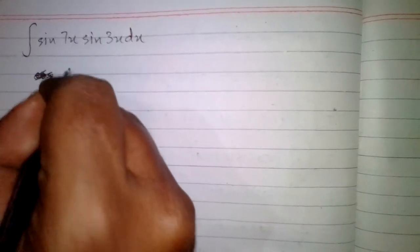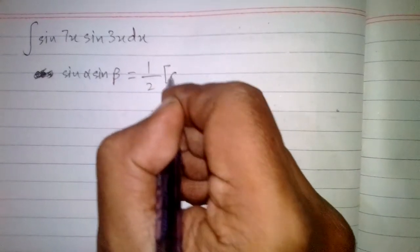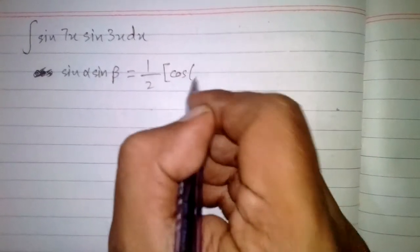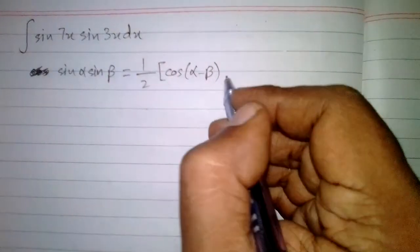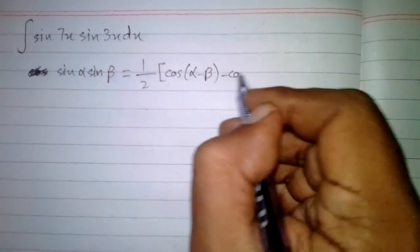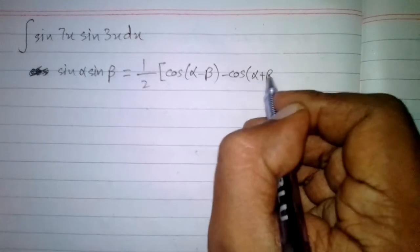In this video we will find the integral of sin(7x)·sin(3x). In order to integrate, we will use the formula sin(α)·sin(β) = ½[cos(α - β) - cos(α + β)].